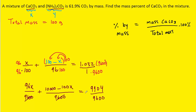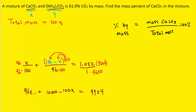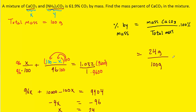Once we have the common denominator we can cross it off. Combining like terms, 96x minus 100x gives negative 4x. Subtracting 10,000 from both sides gives about negative 96. Dividing both sides by negative 4, we get x equals 24. Recall that x was the grams of calcium carbonate. Taking 24 grams divided by the assumed total mass of 100 grams and multiplying by 100%, we get 24% by mass of calcium carbonate.